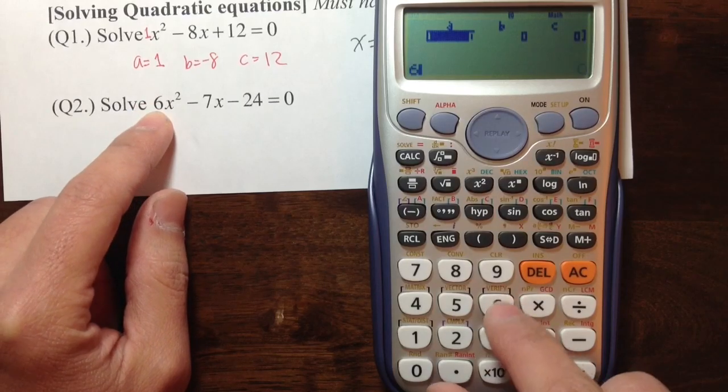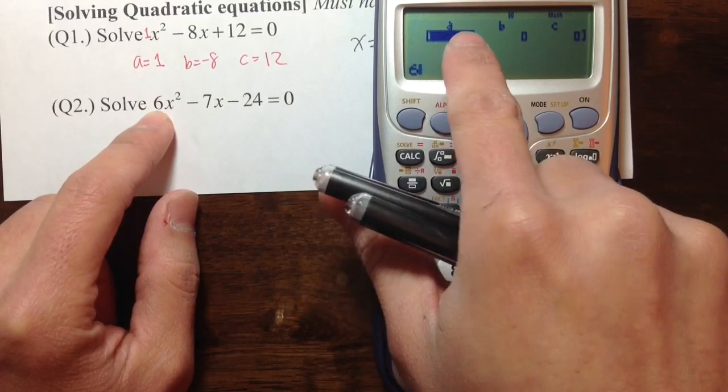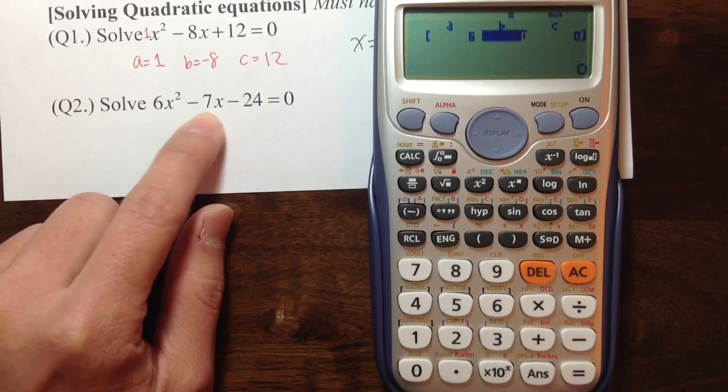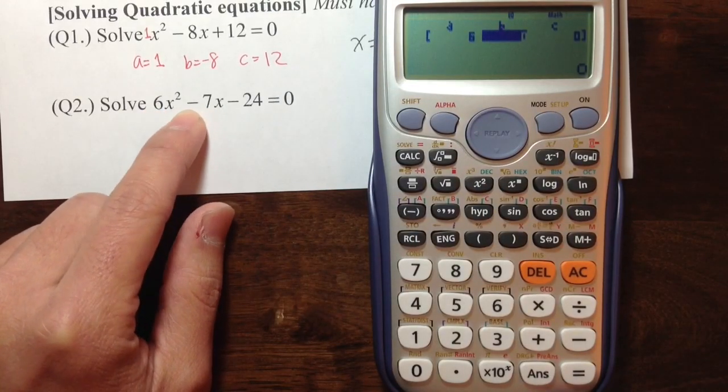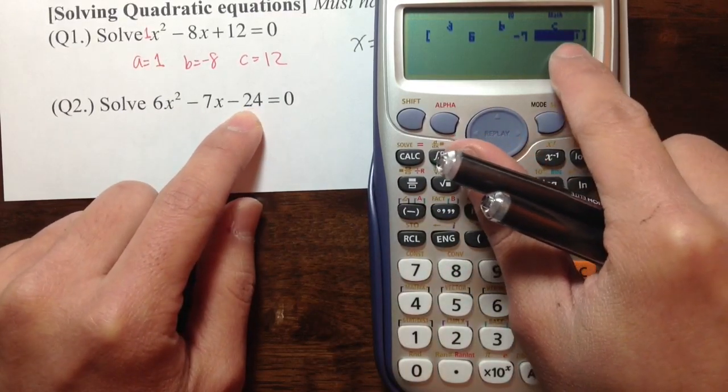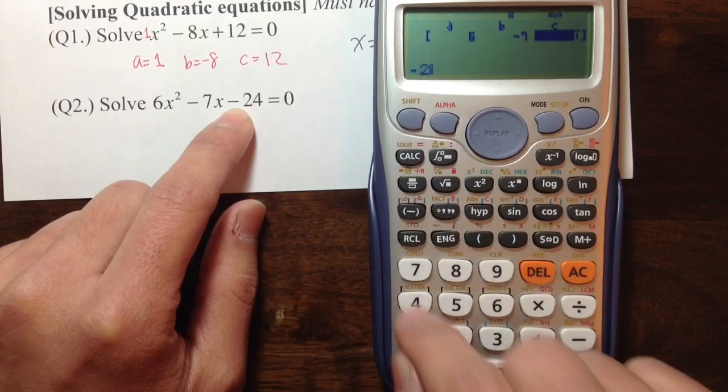The number in front of the x² is just 6, equals. The number in front of the x is -7, so -7 equals. The number right here is -24.